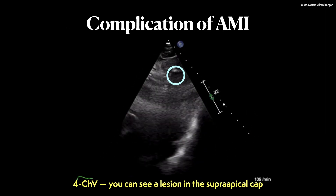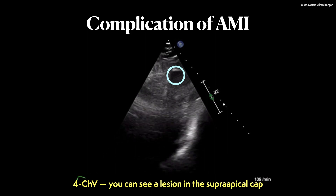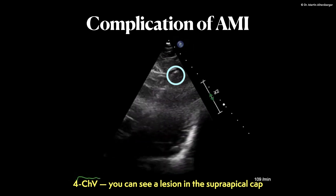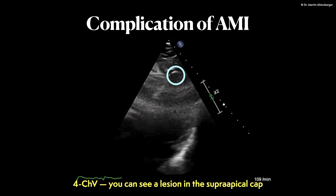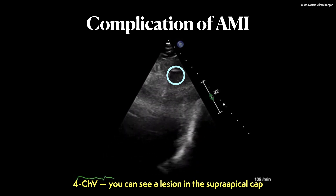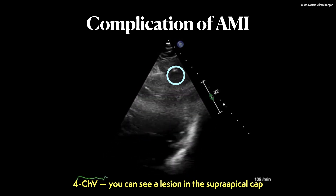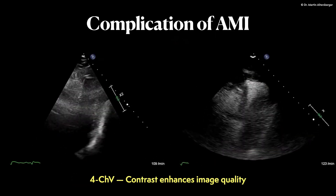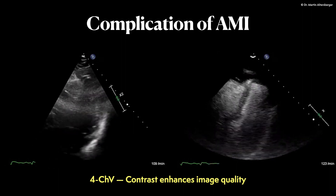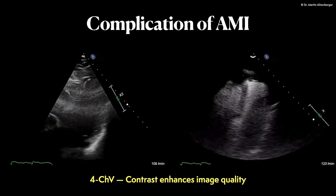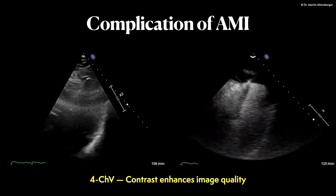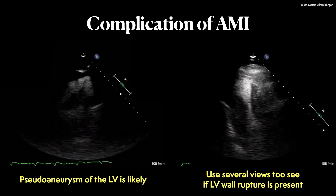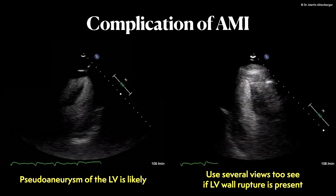Focusing even more towards the apex and going back to B-mode imaging, we do see a lesion in the suprapical cap. This is possibly a complication of acute myocardial infarction by means of rupture. Using both the B-mode image and the contrast enhanced image, we see that the wall is very thin and there seems to be a ventricular rupture — a septal rupture of the left ventricle. Furthermore, in more detailed imaging it is also possible that we see a pseudo-aneurysm.